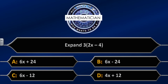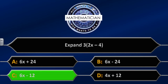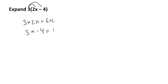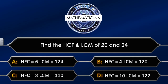The correct answer is C, 6x minus 12. To expand the brackets, multiply the first term outside the bracket with the first term inside: three times 2x gives 6x. Then multiply the outside term with the second term inside the bracket: three times minus four gives minus twelve. So the final answer is 6x minus 12. That's our final answer. Question four.